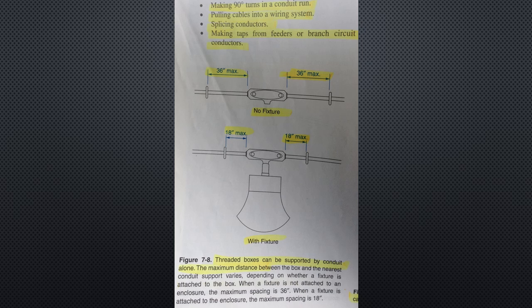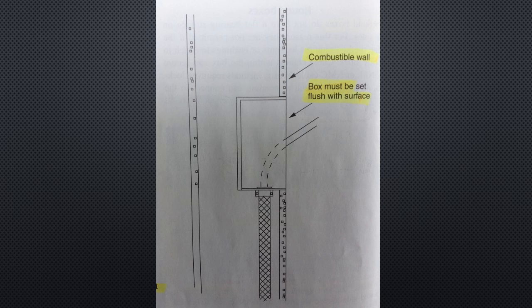Threaded boxes with a volume less than 100 cubic inches may be supported by conduit alone. Two conduits threaded wrench tight into the enclosure are considered adequate support. Figure 7-8 on the screen illustrates the maximum spacing between the box and the nearest conduit support. Boxes and enclosures can be mounted using nails or screws. If nails pass through the interior of the enclosure, they must be located within a quarter inch of the end or back of the box. If a box is located in combustible material, it must be installed flush or project from the surface. If installed in a non-combustible material, the box may be set back a quarter inch from the surface. See Figure 7-9, part of which is shown on the screen.